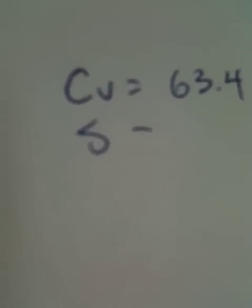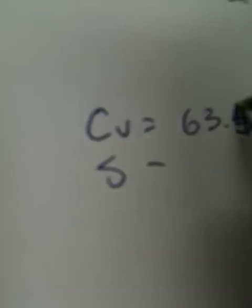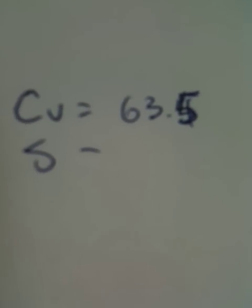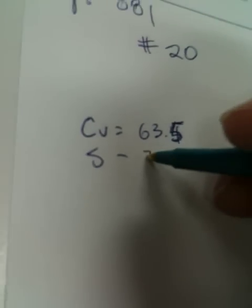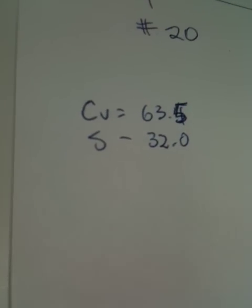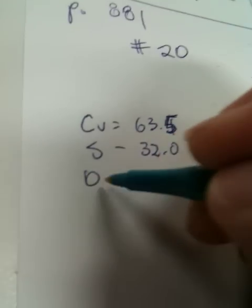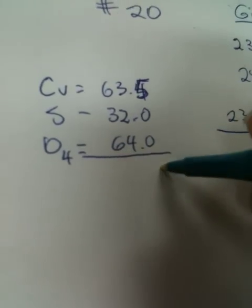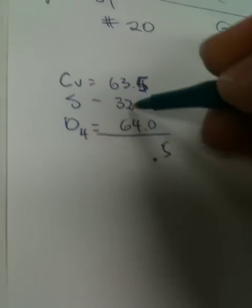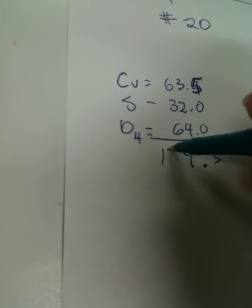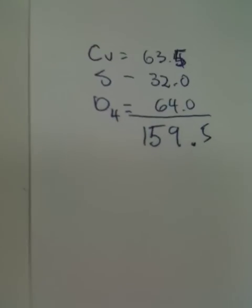63.5, yeah, okay. And then we got our sulfur at 32. And these oxygens, we have four of those, and that's 64. And we got 0.5 out here. 6, 7, 8, 9, 12, and 3 is 15. 159 grams per.